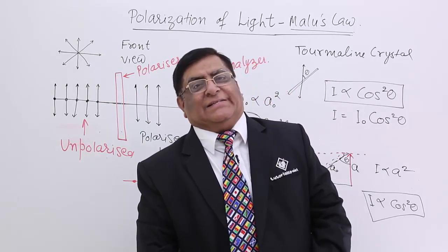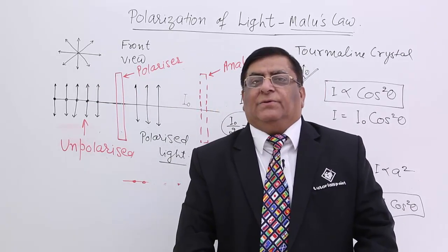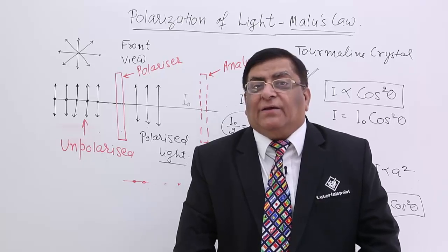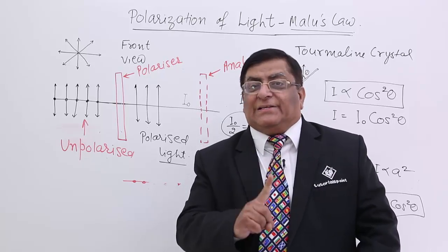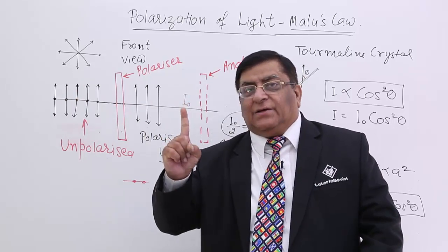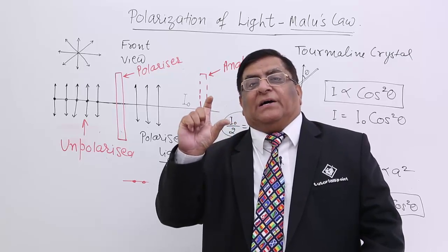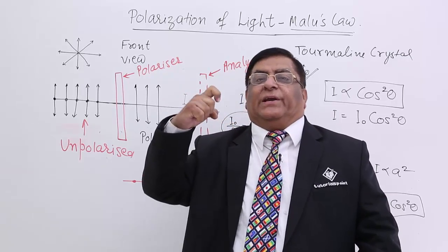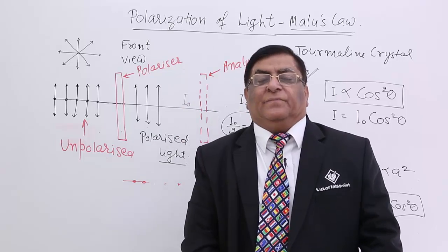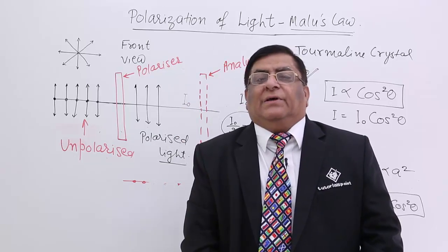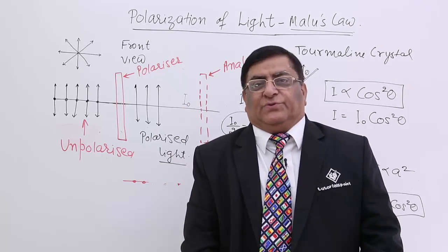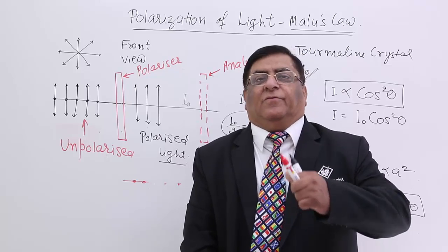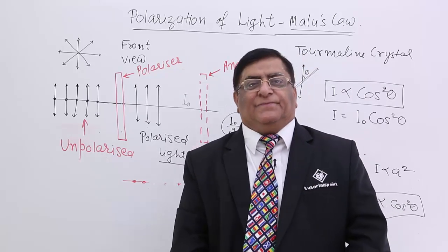This is Malus's law, and Malus's law tells us about the intensity of polarized light after it has passed through an analyzer which is rotated by angle theta. There is another law which we have to study — that is Brewster's law — and we will study that in the next lecture. Thank you.